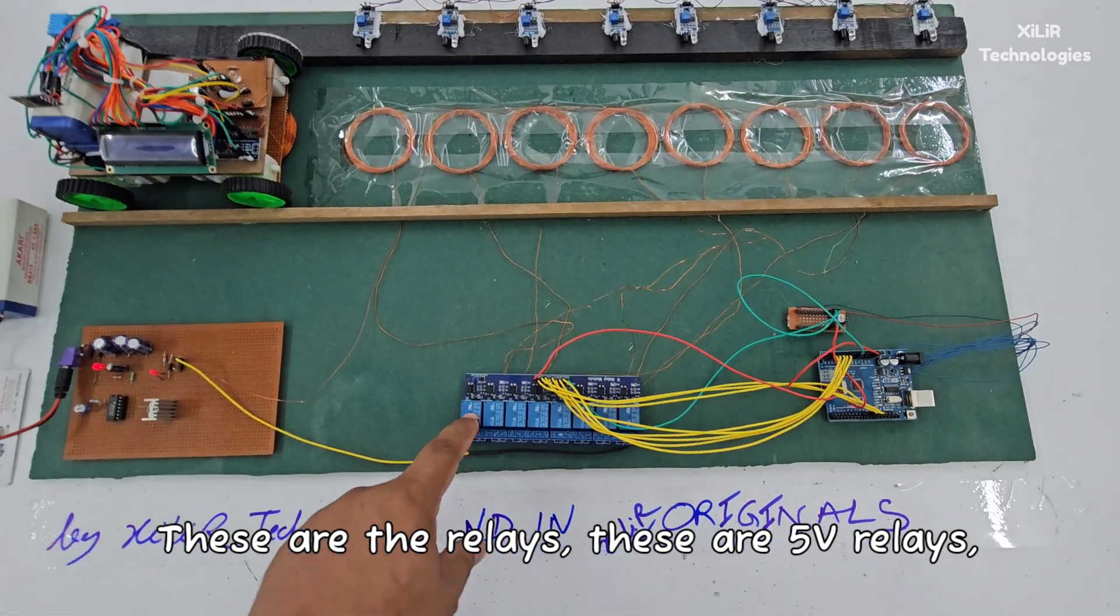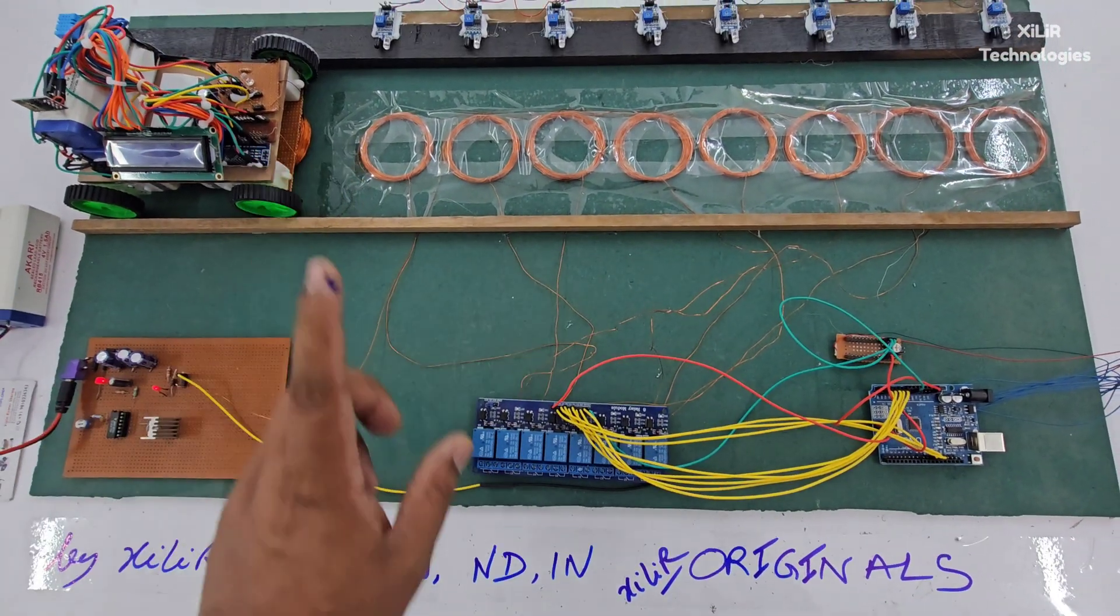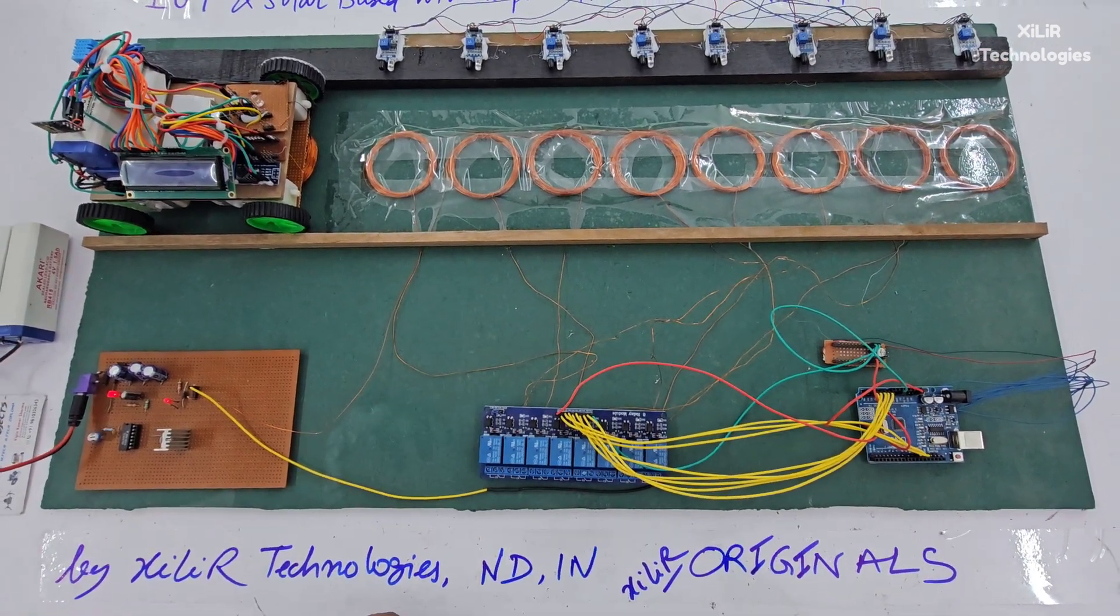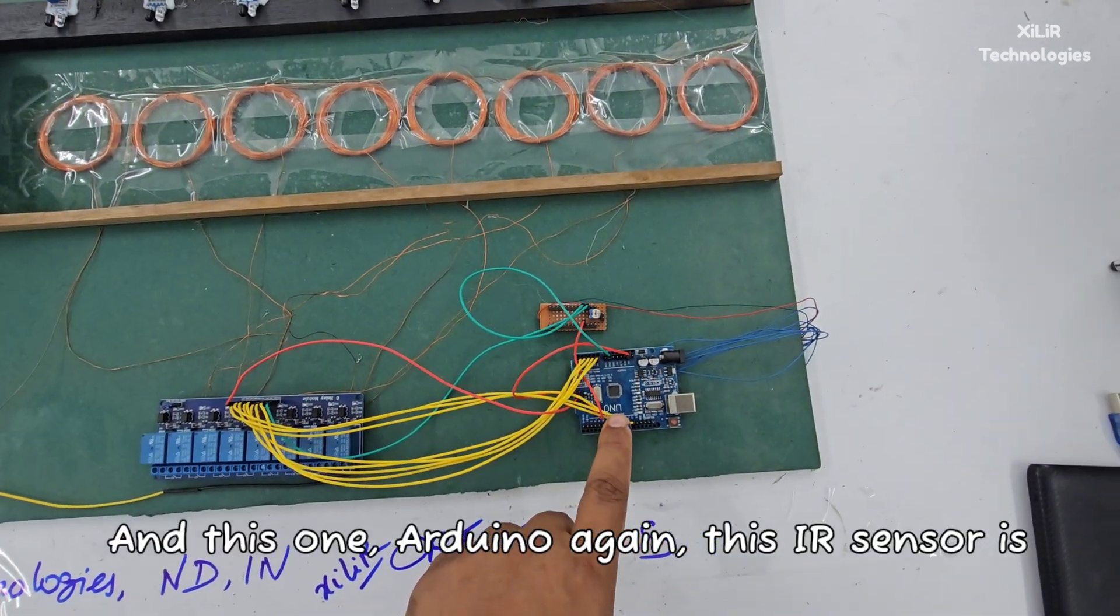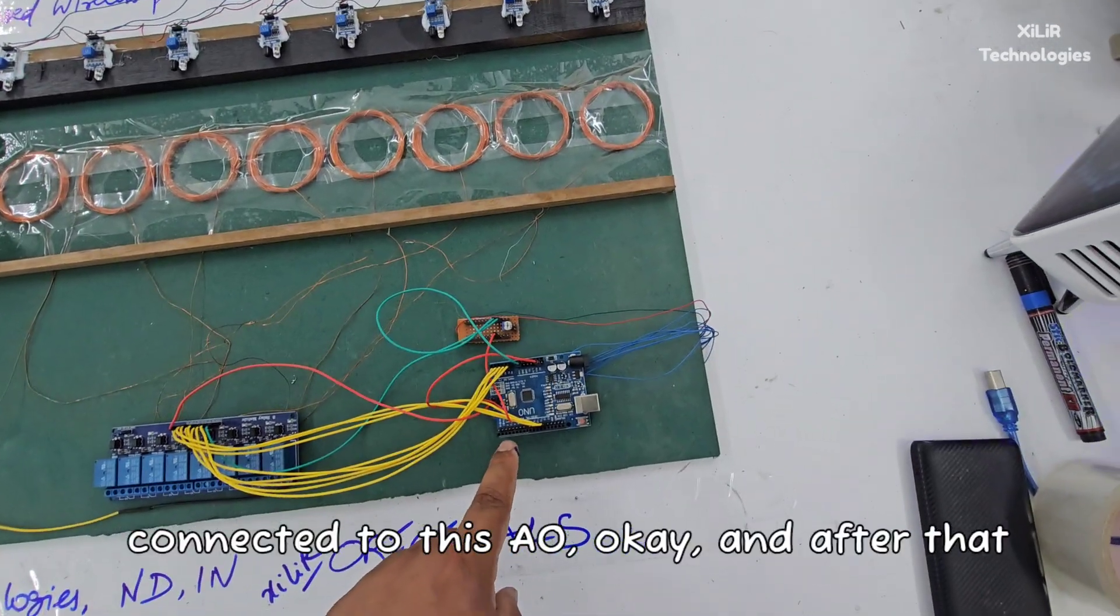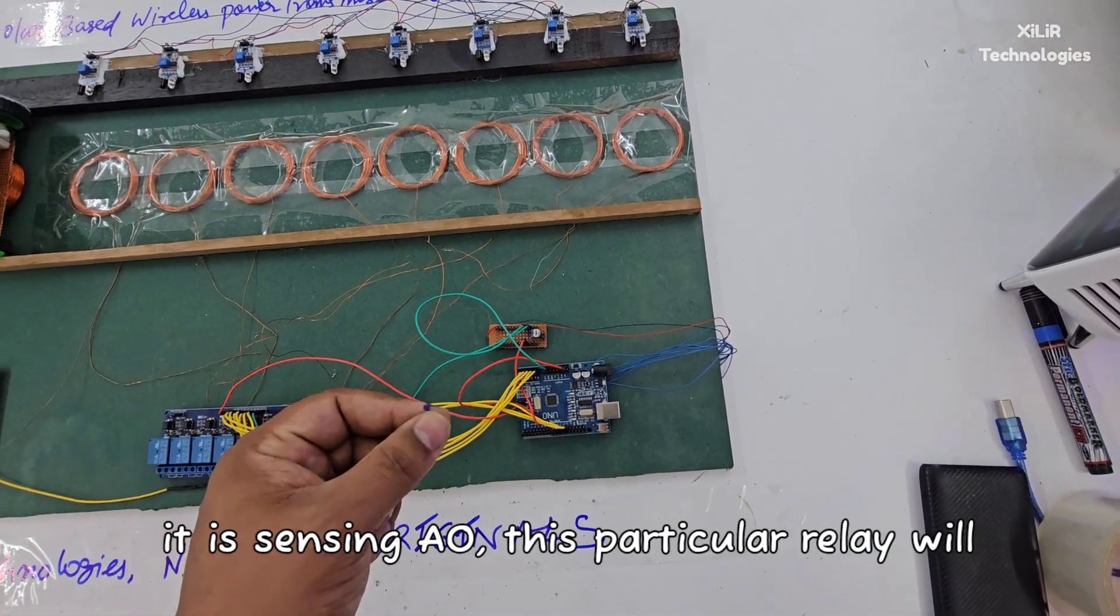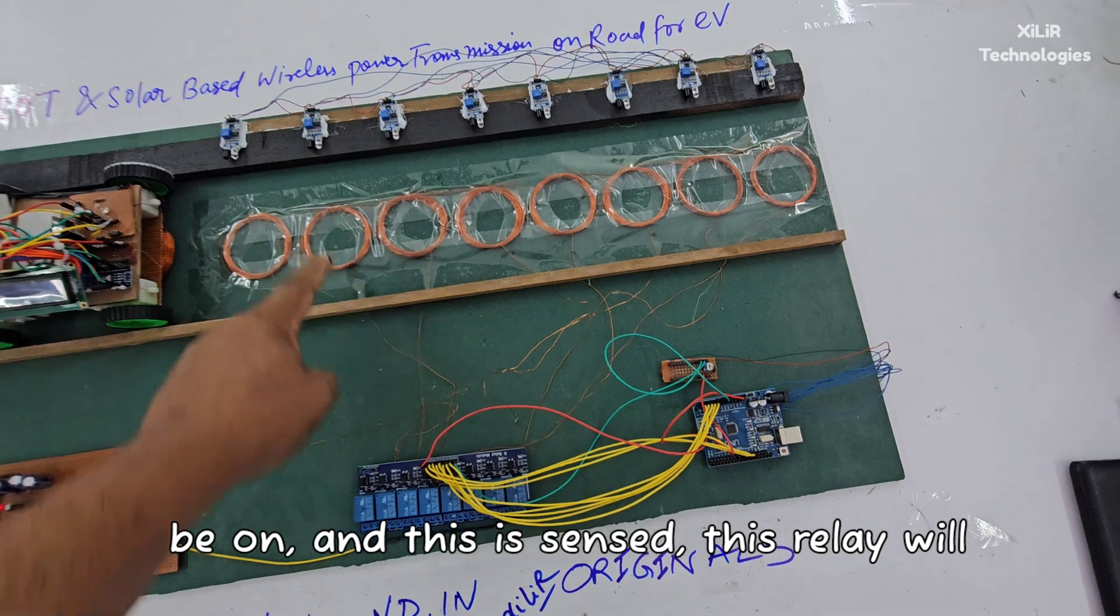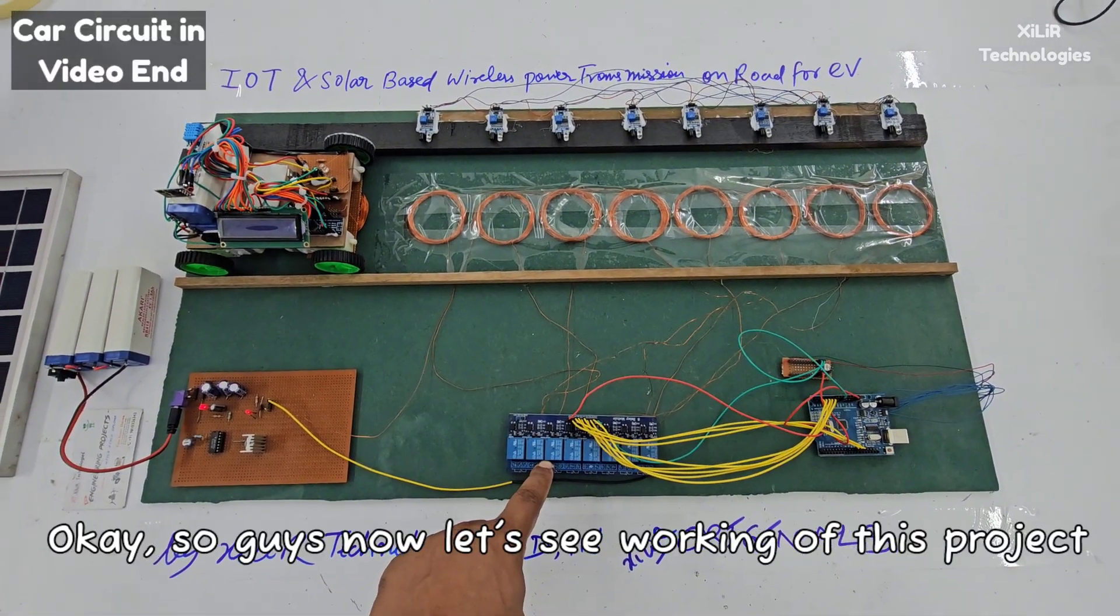These are 5 volt relays. When this coil gets 5 volts, the relay will turn on the particular coil. These coils are connected to the normally open point of the relay. This IR sensor is connected to A0, and after it senses A0, this particular relay will be on. When this is sensed, this relay will be on. Like this, the project will be operated.